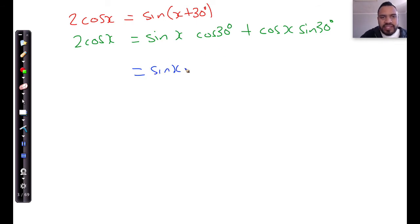Sine of x is just simply sine x. Cos of 30, what is that? Cos of 30 degrees is root 3 over 2, which is the same as sine of 60. Cos of x is just cos of x. And sine of 30 is equal to a half.